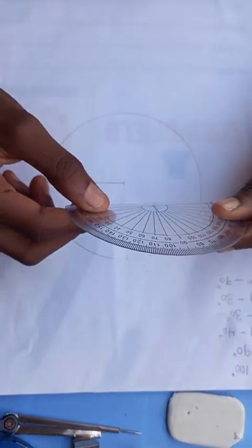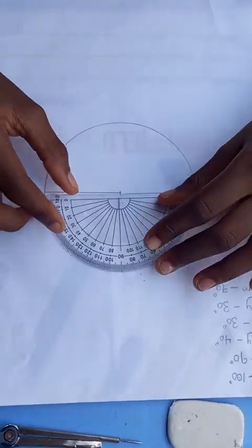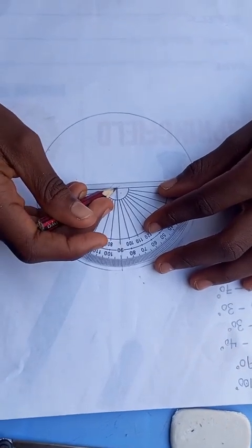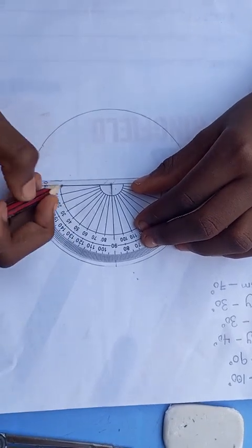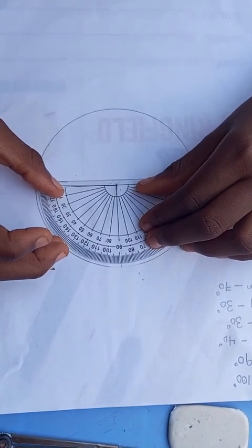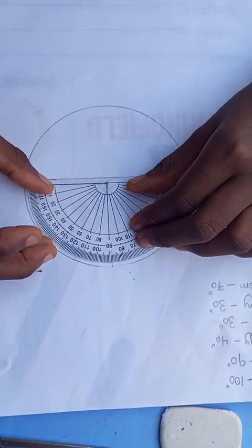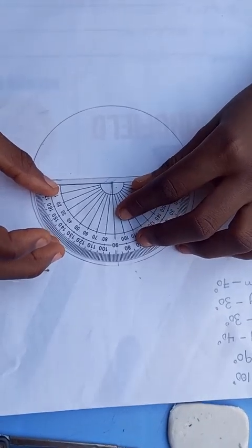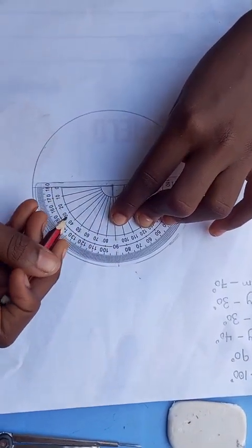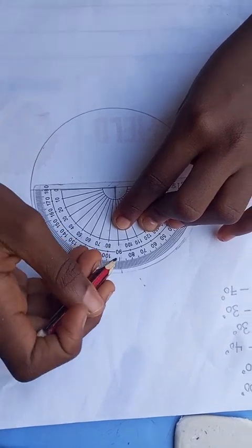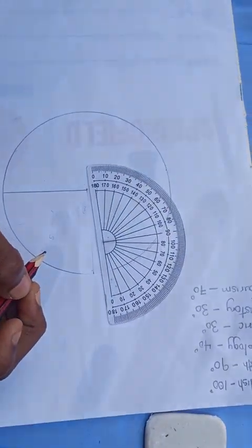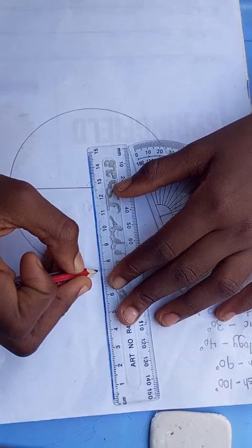This is our protractor. Replace our protractor, this line at this point at the center. This line to the pencil line, which is connected to zero. This is 90 degrees. Then 20, 30, 40, 50, 60, 70, 80, and this is 90 degrees. We mark. So with our straight ruler, we draw a line.